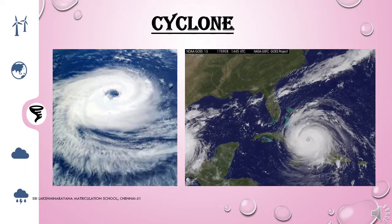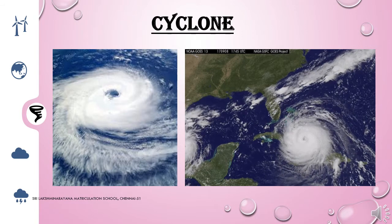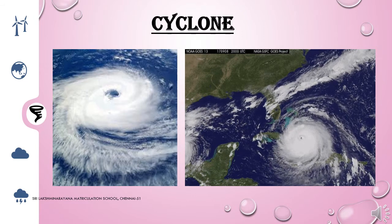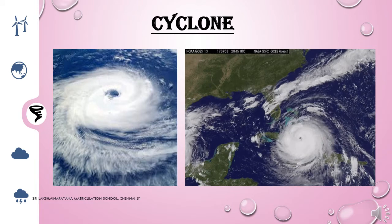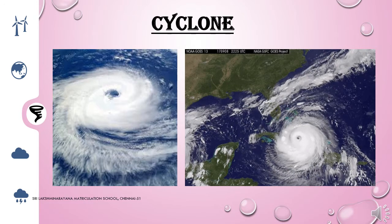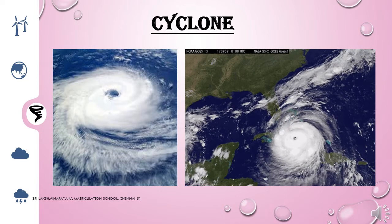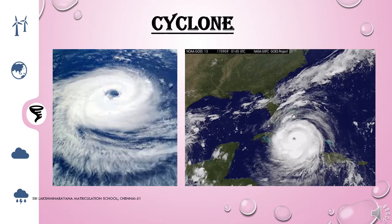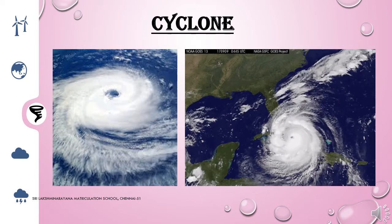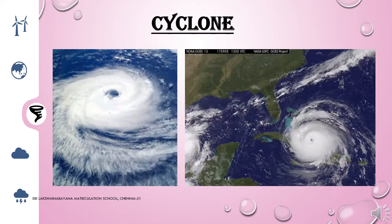A cyclone is a violent wind that moves in a circle causing a storm. It changes its position and direction from time to time. The speed of wind also changes and it gives heavy rainfall.